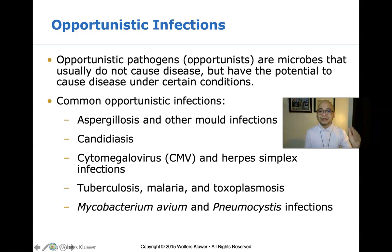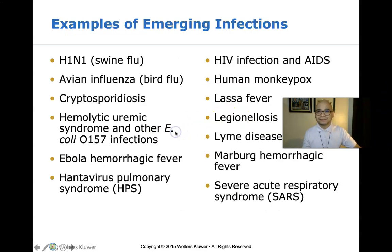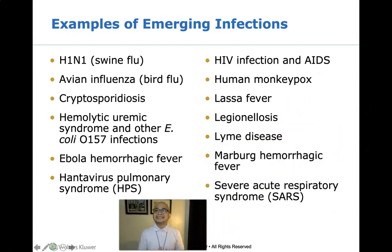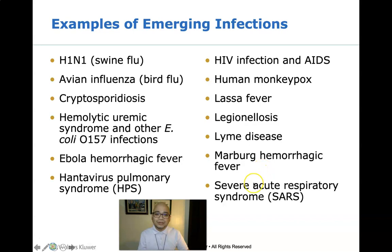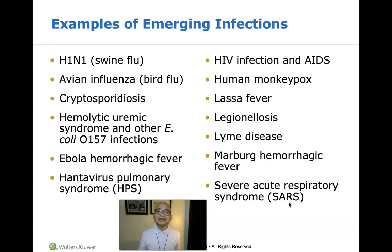These microorganisms may be life-threatening for people with weak immune systems. Emerging infections are those whose incidence in humans has increased in the past two decades, including H1N1 and avian influenza. Notably, SARS was listed as an emerging infection — likely referring to SARS-CoV-1 from 2003. Now we are experiencing the SARS-CoV-2 pandemic, which emerged about 16 years after the original SARS.